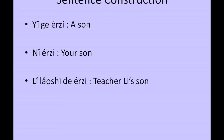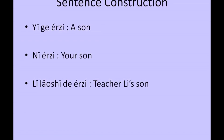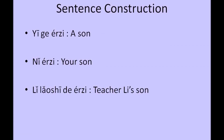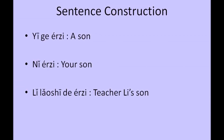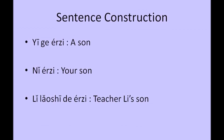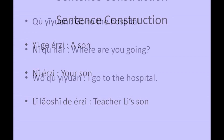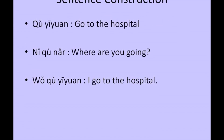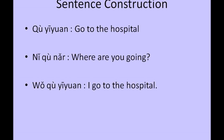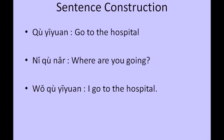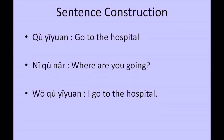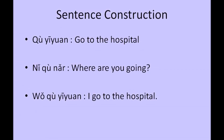一个儿子, which means a son. 一个儿子. 你儿子, which means your son. 你儿子. 李老师的儿子, which means teacher 李悦's son. 李老师的儿子. 去医院, which means go to the hospital. 你去哪儿? which means where are you going? 我去医院, which means I go to the hospital.